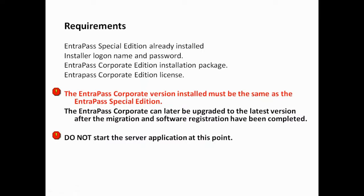So what are the requirements? To do a migration, you will need the system running — the Special Edition already installed and working. We also need the login information because we'll need to access the system. Then, since we're going from Special to Corporate, we need the Corporate Edition software and the Corporate Edition license. To switch from one Entrapass edition to another, you essentially need the license of the edition you're migrating to.